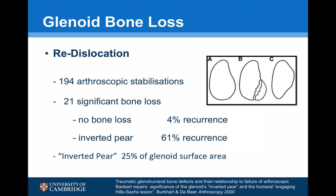The significance of bone loss and the failure of anterior instability surgery was first highlighted by Burkhart and de Beer. They looked at 194 arthroscopic stabilisations, stratifying those that had failed into those with significant bone loss and those without. They found that the failure rate in patients with only a small amount of bone loss was less than 4%. However, if the bone loss was past a certain threshold — described as an inverted pear — accounting for about 25% of the glenoid, the failure rate increased to 61%.